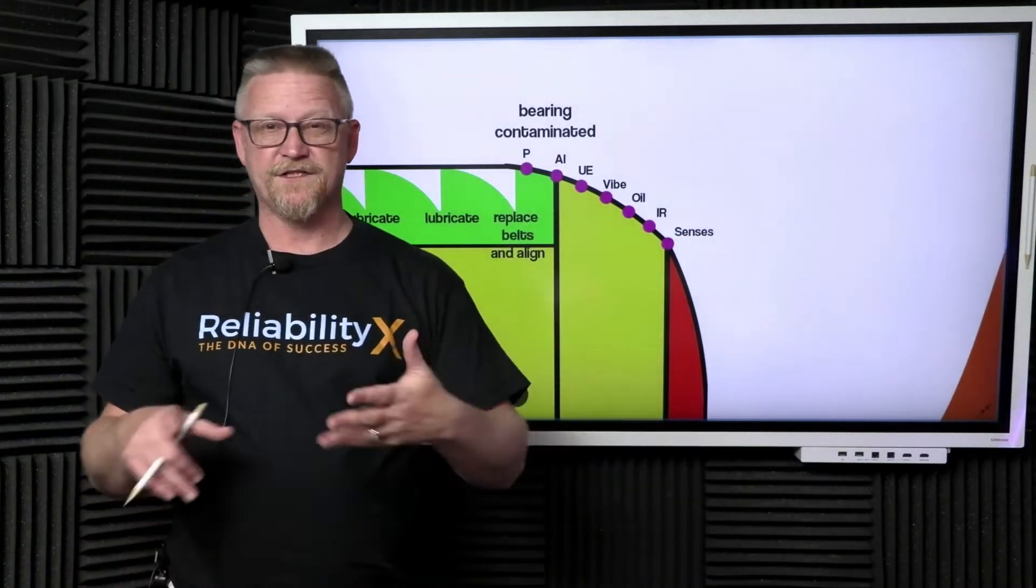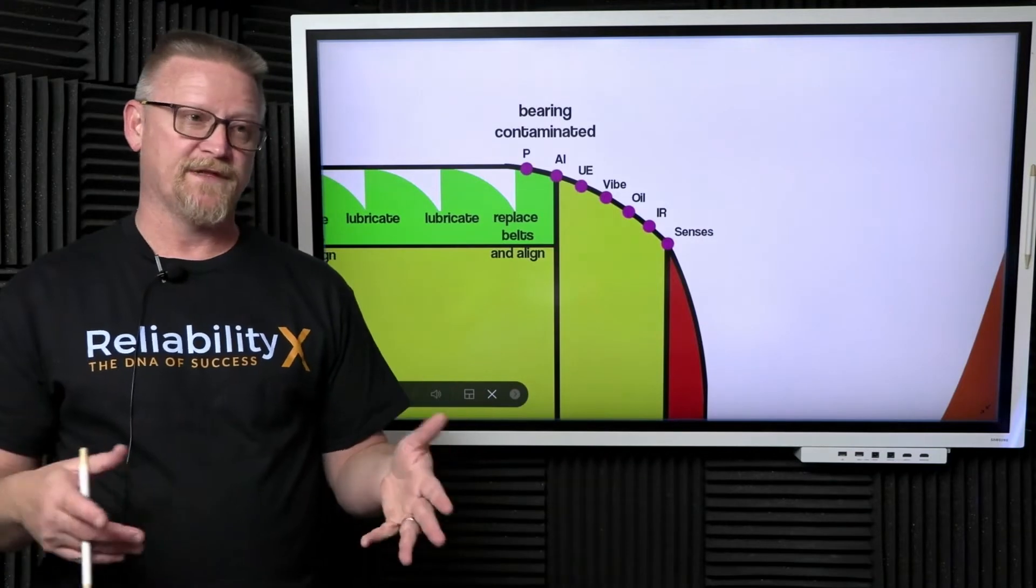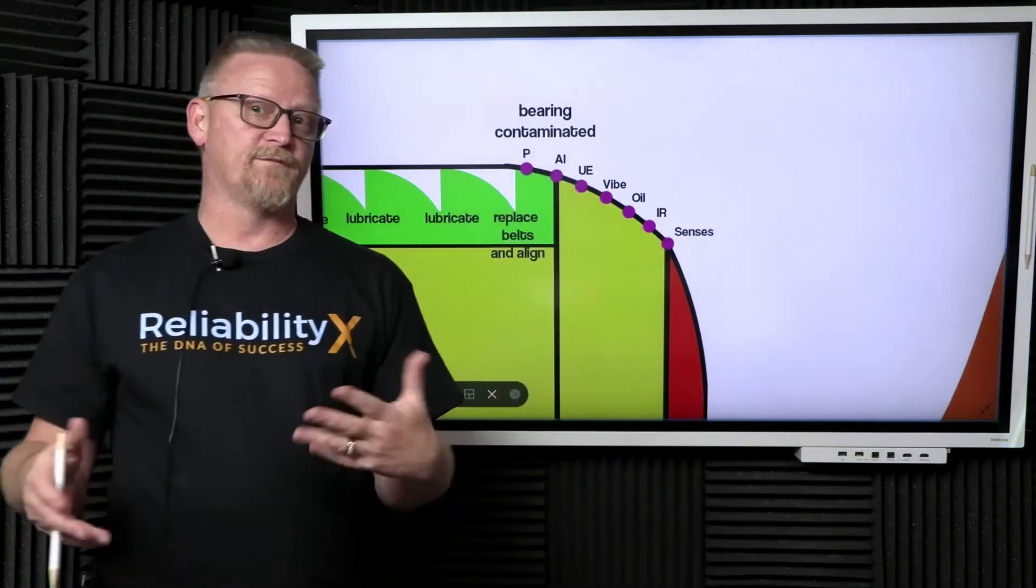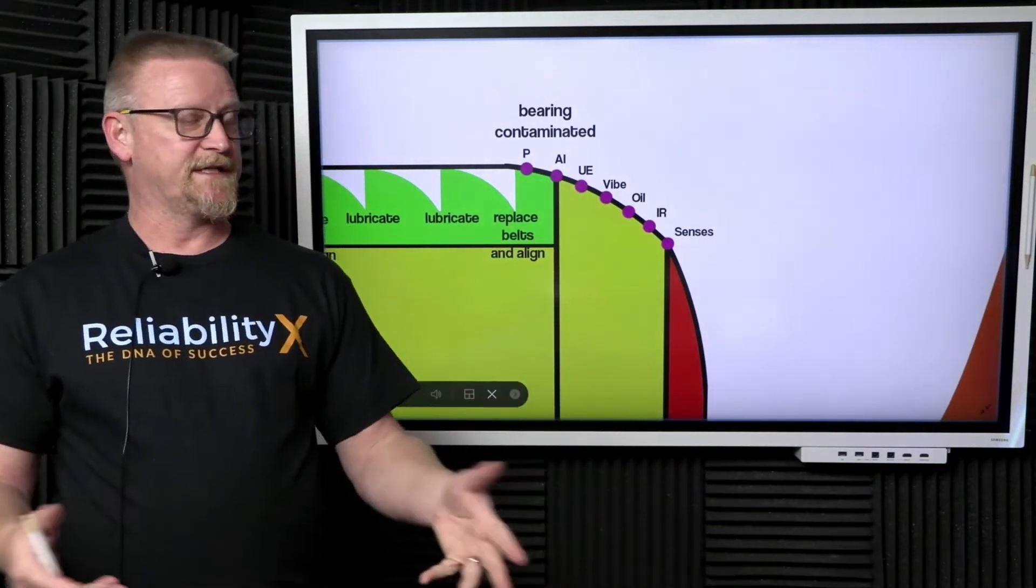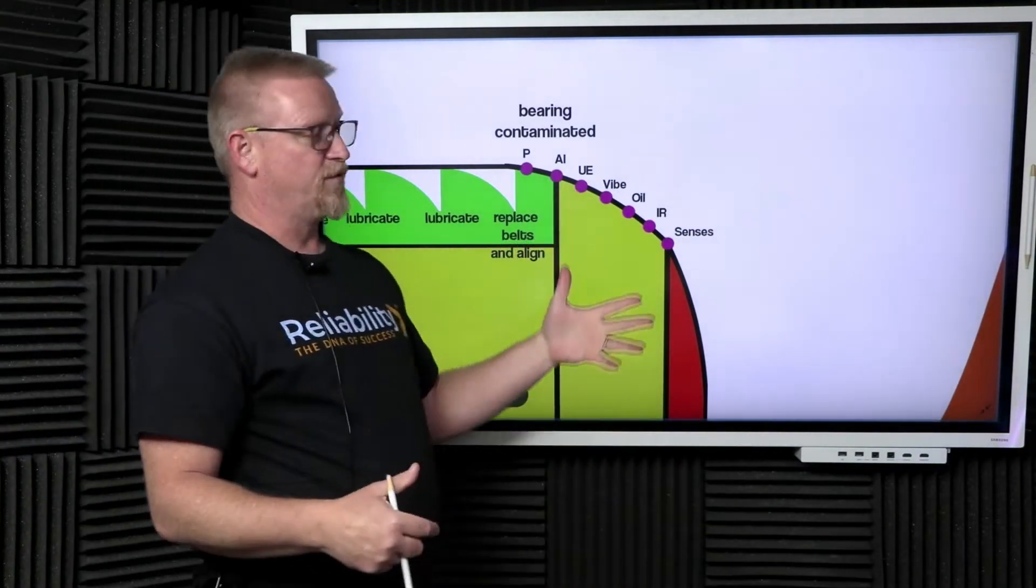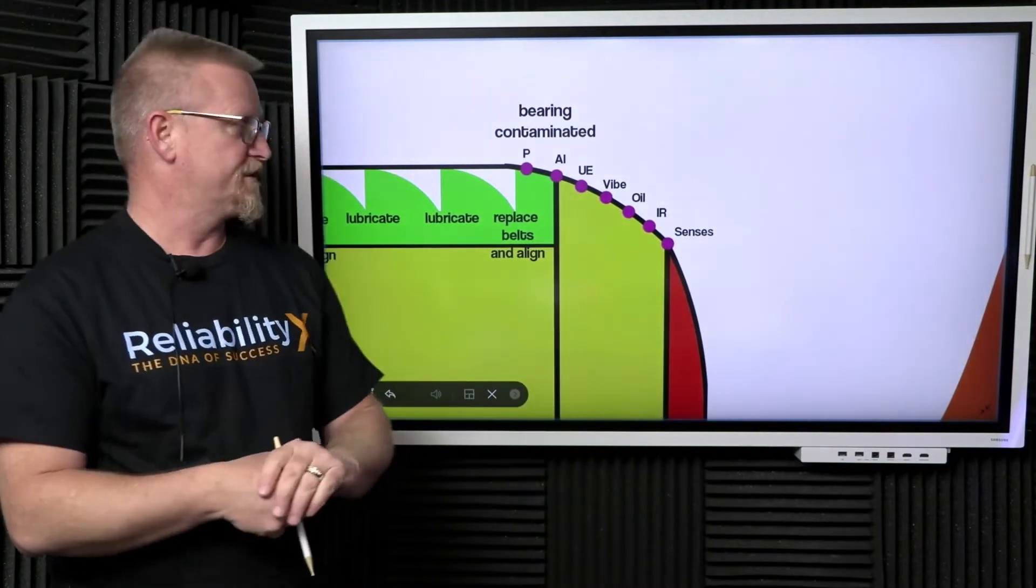There are things like artificial intelligence and machine learning—these can pick up things based on a variety of parameters. Then ultimately ultrasound can hear that there is contamination inside the bearing. Vibration analysis can pick up that there's something going on on a cage pass frequency or an outer race defect.